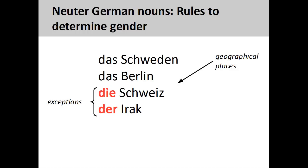Finally, the names of countries, cities, and continents such as Schweden meaning Sweden, and Berlin, are neuter, although you need to be aware that exceptions to this rule, such as die Schweiz meaning Switzerland, and der Irak meaning Iraq, also exist.